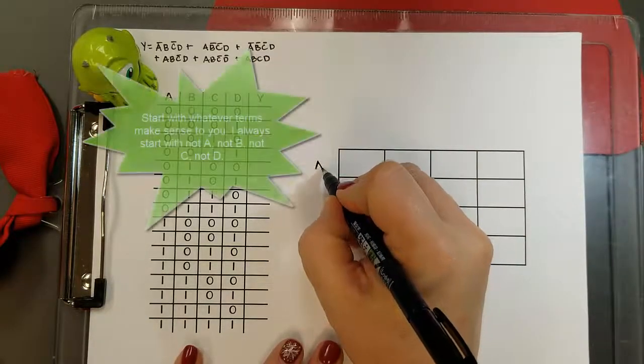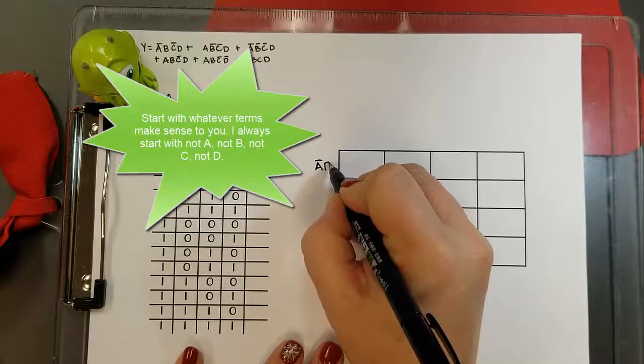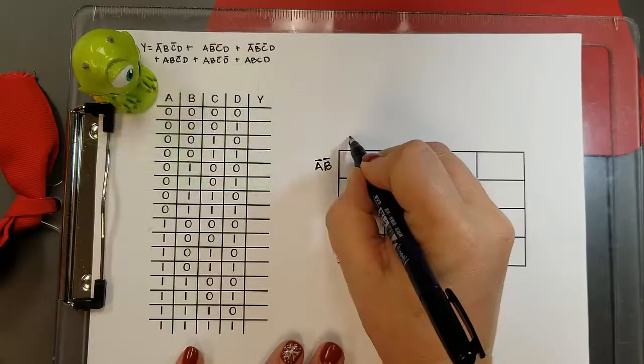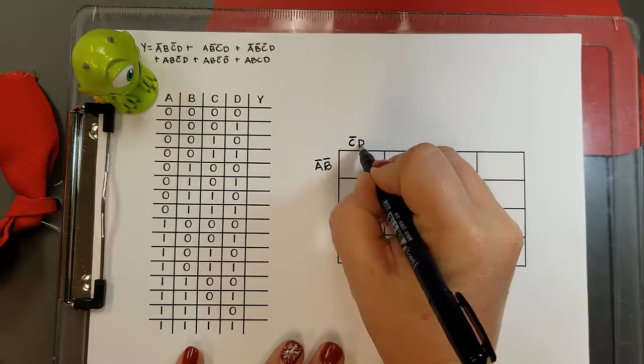I started with not A, B, not C, D in the corner. As I move both across and down, I can only change one term.